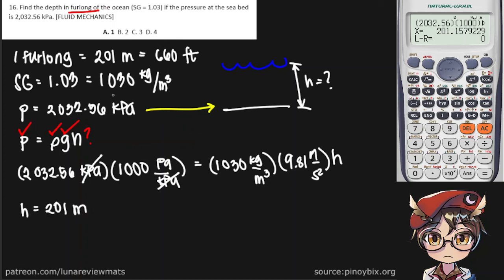Now remember, one furlong is exactly equal to 201 meters. So our height, or rather the depth of the ocean, is exactly one furlong. And that is our final answer.